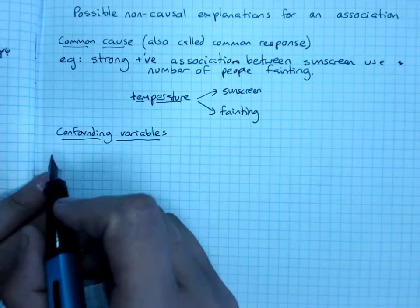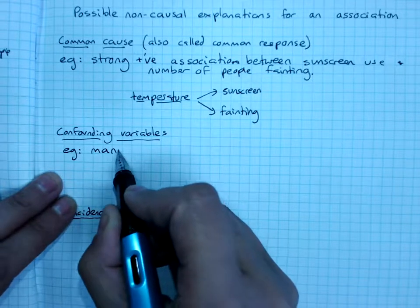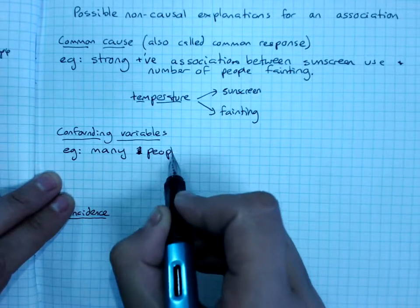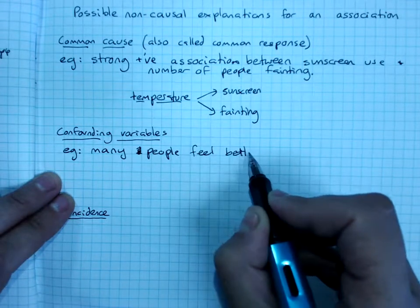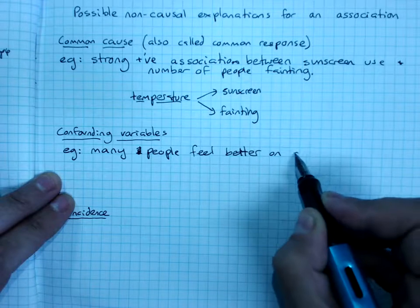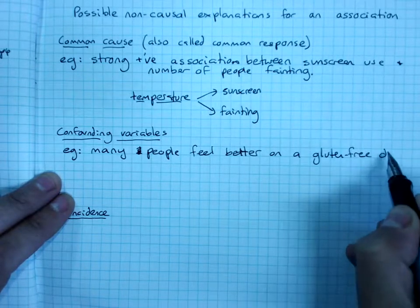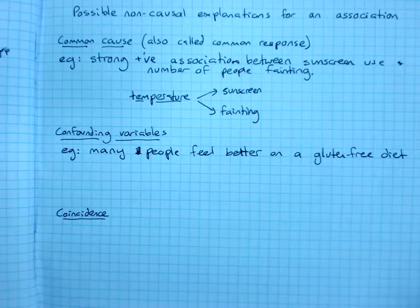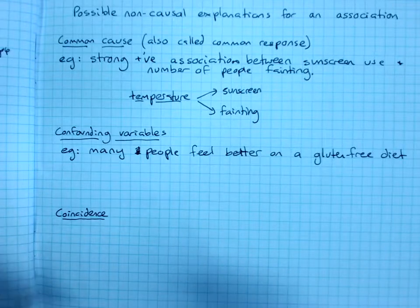Confounding variables is another one. So for example, many people feel better on a gluten-free diet, myself included. So we could say that lower gluten equals higher well-being, and we've got an association there.